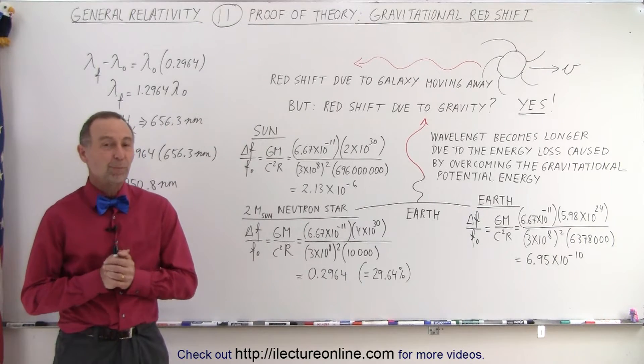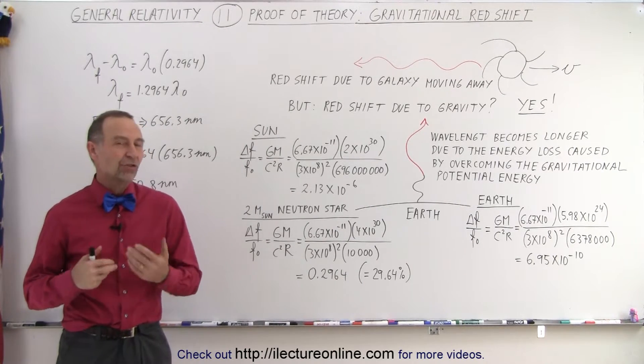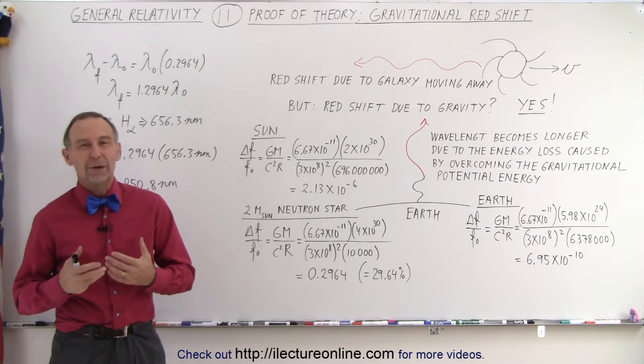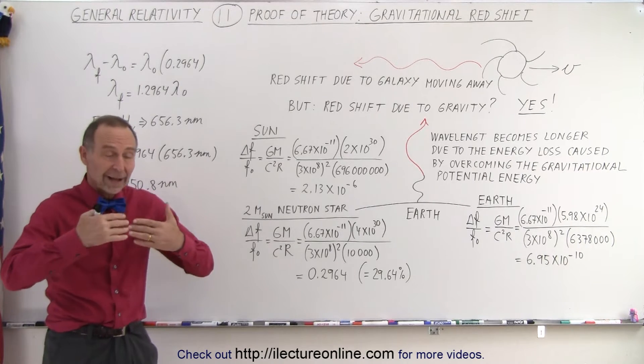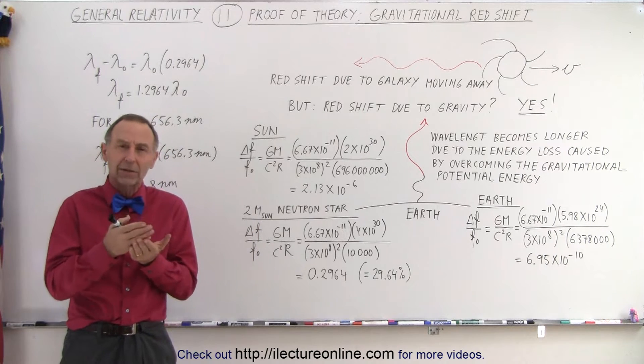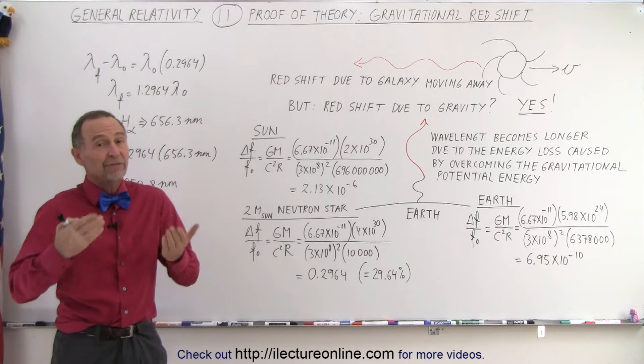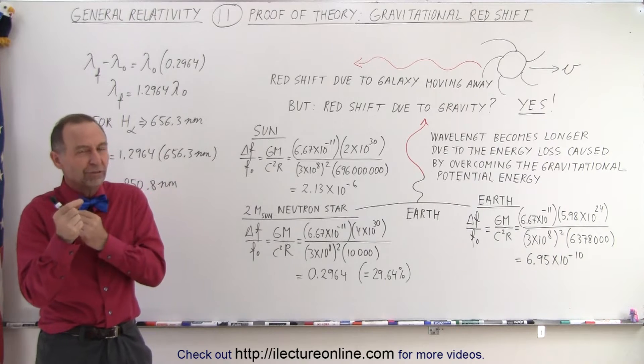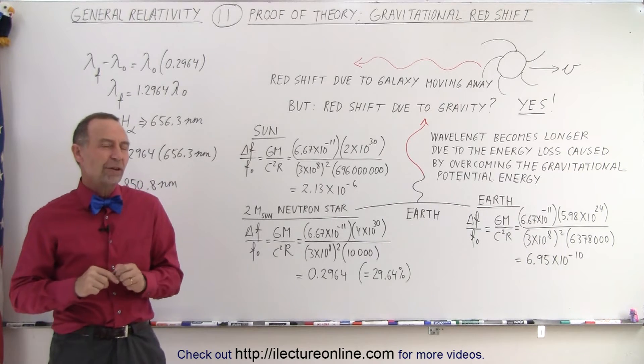Welcome to iLectroOnline. Most of us that have taken a course in astronomy may remember the redshift, the redshift caused by galaxies and stars moving away from us. We can actually calculate the velocity at which they move away from us by measuring the redshift. It's called the recessional redshift.